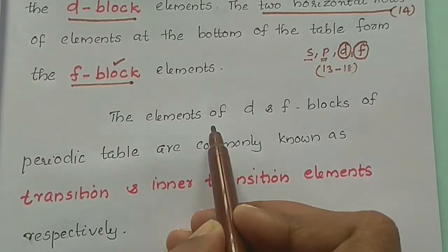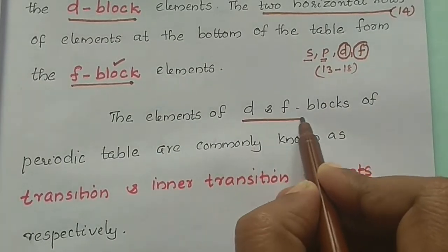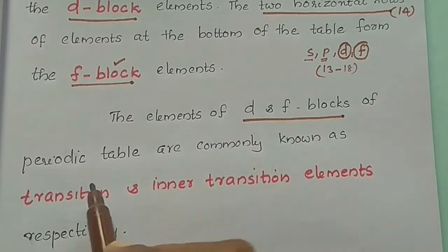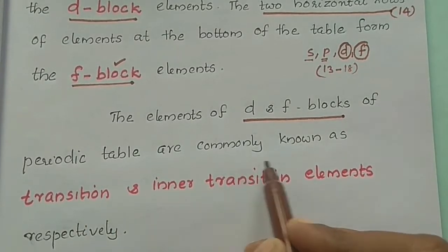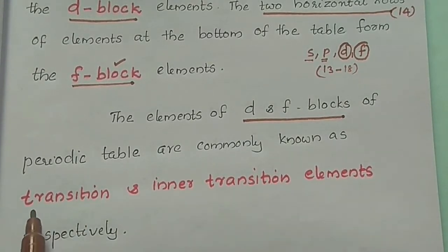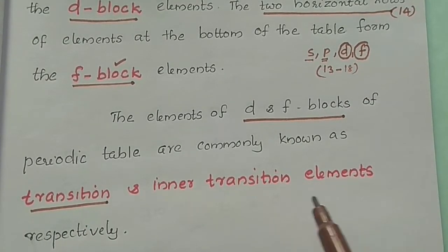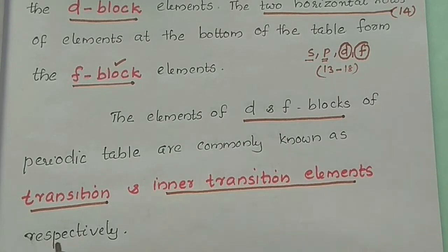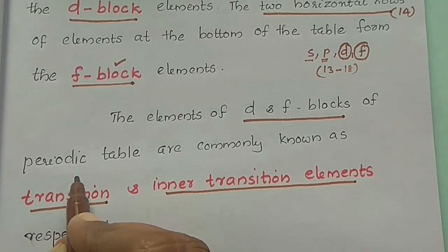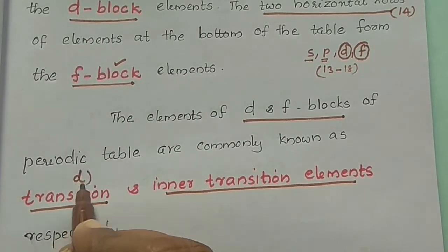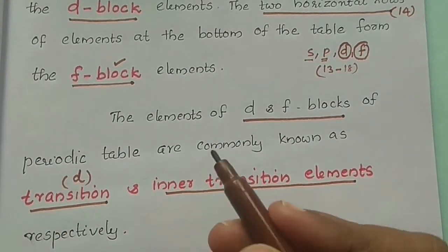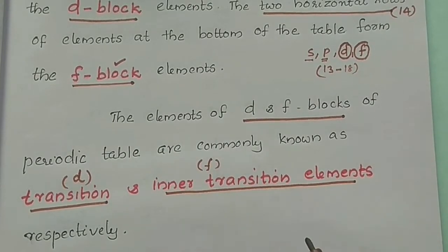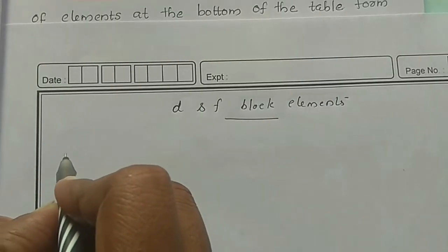The elements of D and F blocks of the periodic table are commonly known as transition elements and inner transition elements respectively. The D block elements are transition elements, and the F block elements are inner transition elements.